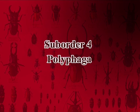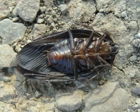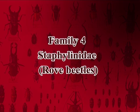Suborder four is Polyphaga. Their wings are without oblongum. The notopleural suture is not visible. The first visible abdominal sternite is not divided. Metathoracic coxae are movable. Tarsi will be variable. Adults and larvae are varied in their habits.